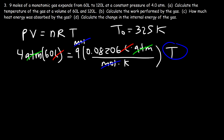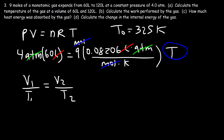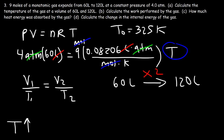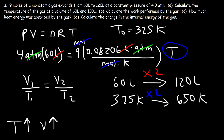Now let's calculate the final temperature at a volume of 120 liters. We can use Charles' law: V₁/T₁ = V₂/T₂. Notice the volume increases from 60 to 120 liters — it increases by a factor of 2. Since at constant pressure volume and Kelvin temperature are proportional, if the volume doubles, the temperature doubles: 325 times 2 is 650 Kelvin.